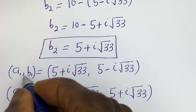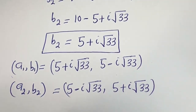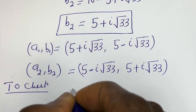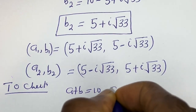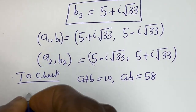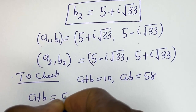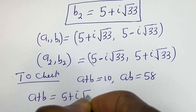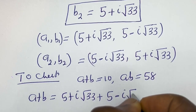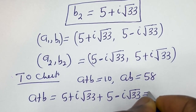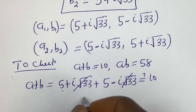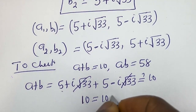Let's check using a1 and b1. For the first equation, a plus b equals 5 plus i root 33 plus 5 minus i root 33. The imaginary terms cancel, and 5 plus 5 equals 10, which is equal to 10. This is true.